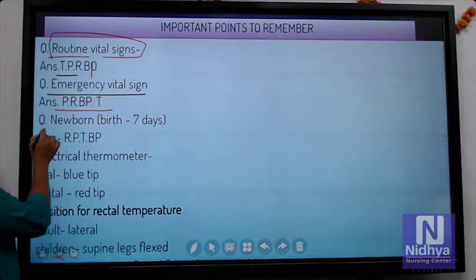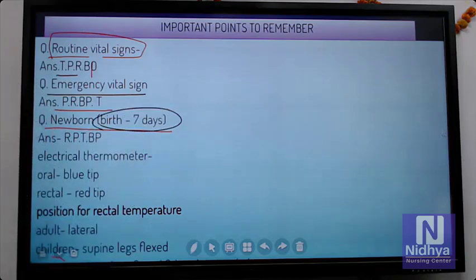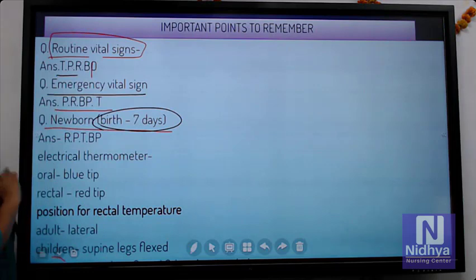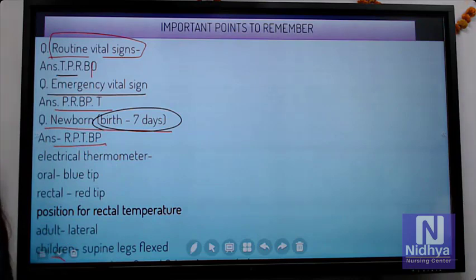Newborn - birth to seven days. Neonate - seven to 28 days. Infant - 28 days to one year. Coming to newborn, that is birth to seven days, you are going to see respiration first, pulse, temperature, and at last BP.